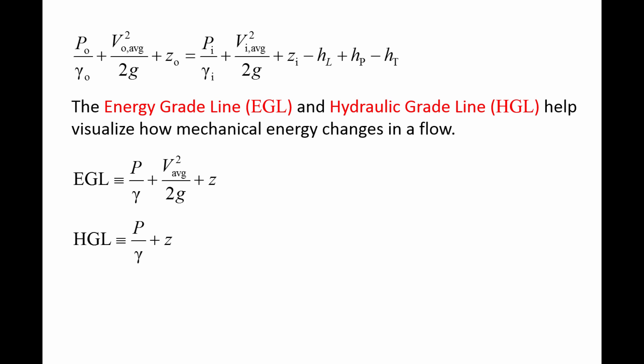EGL is the pressure head, p over gamma, plus the velocity head, v average squared over 2g, plus the elevation head, z, and will represent the total mechanical energy in the flow.